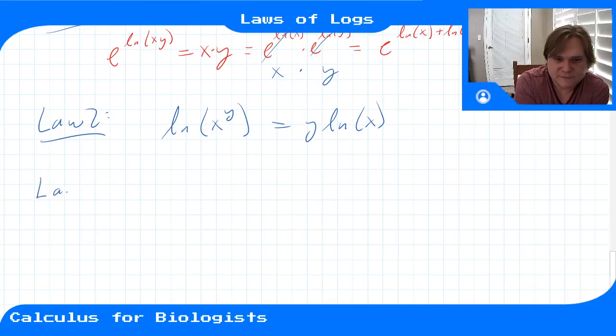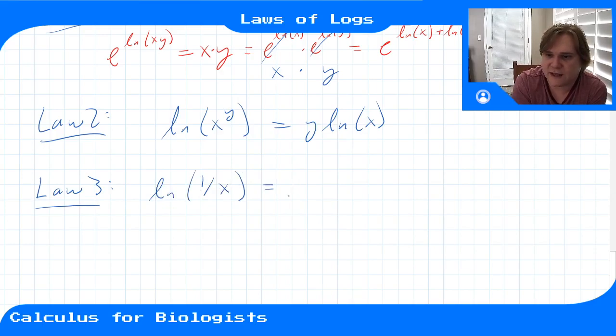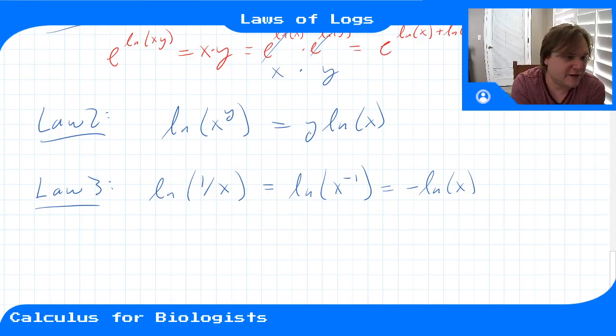Okay, law number 3 says that ln(1/x), you can think of 1/x as x^(-1), and now it's in this form. So then it becomes -ln(x), because the negative one pops out of the logarithm and sits out in front as a factor. So law 3 is a special case of law 2.